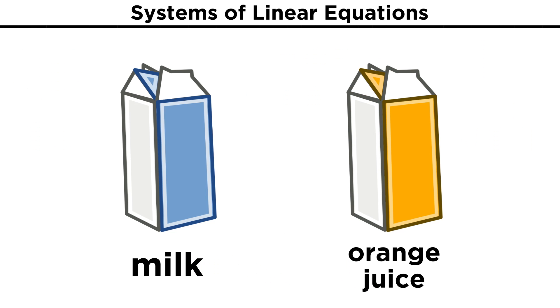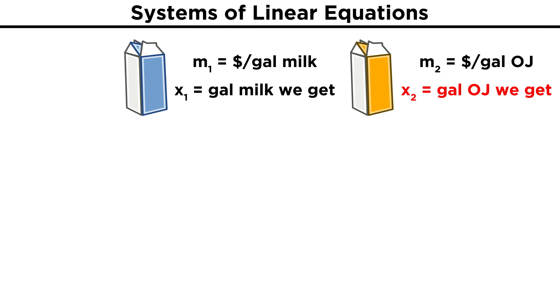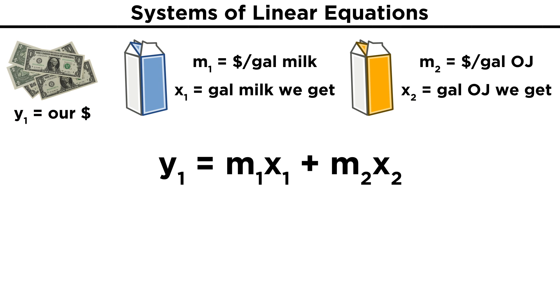Now let's step things up a little. Perhaps we also need to get some orange juice. Let's say that m₁ is the cost of milk per gallon, and x₁ is the number of gallons of milk we get. M₂ is the cost of orange juice per gallon, and x₂ is the number of gallons of orange juice we get. Y₁ is the amount of money we have, and so y₁ will equal m₁x₁ plus m₂x₂. All of a sudden, there are infinitely many options for what to do, as there are infinite combinations of x₁ and x₂ that will satisfy this equation.